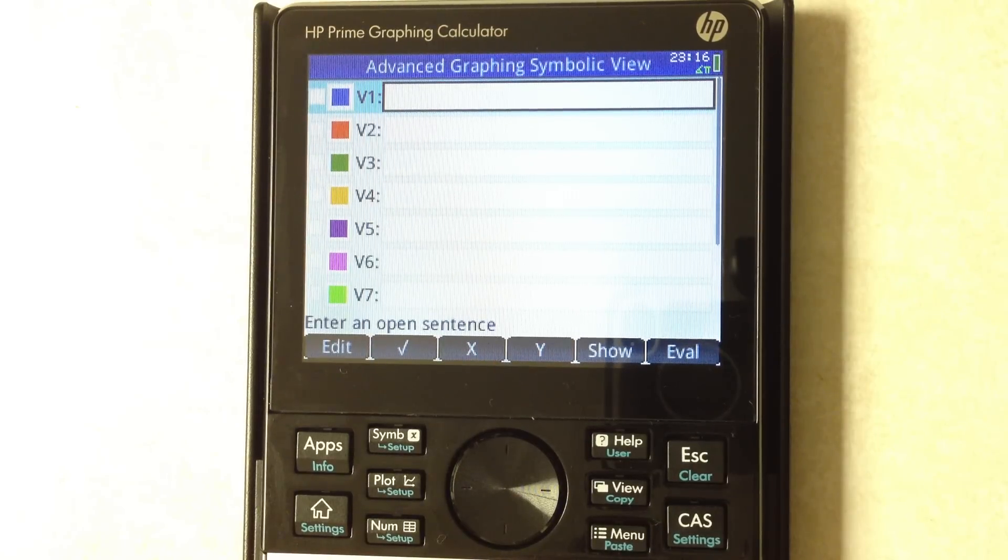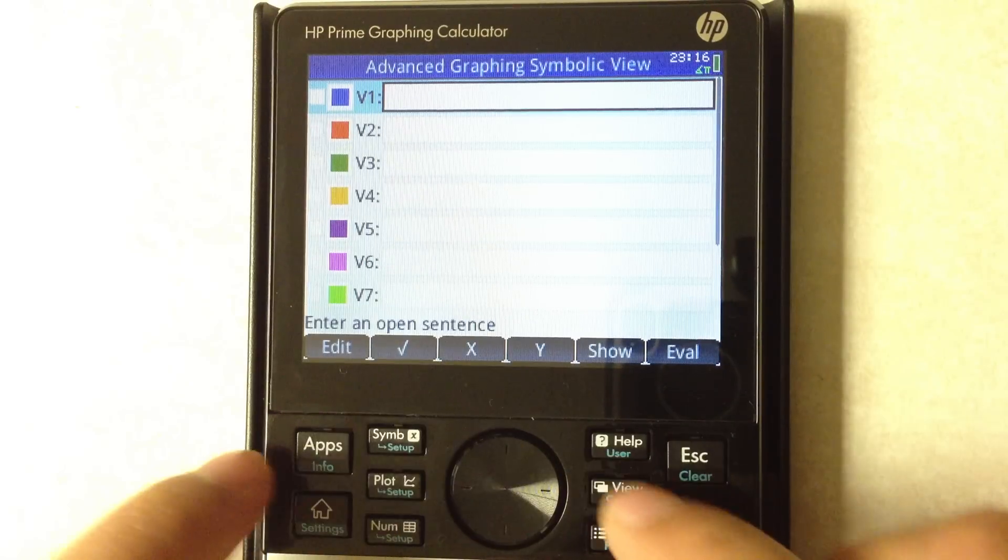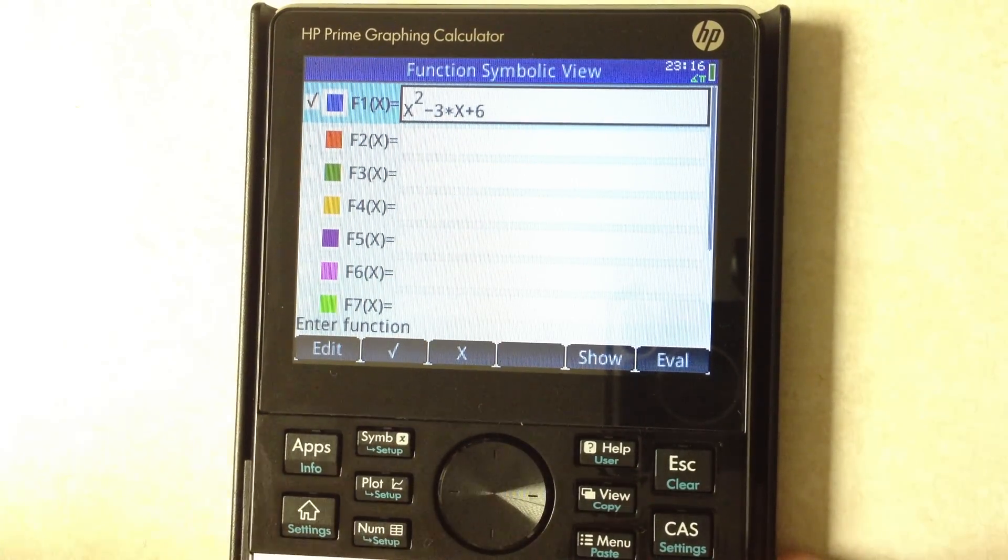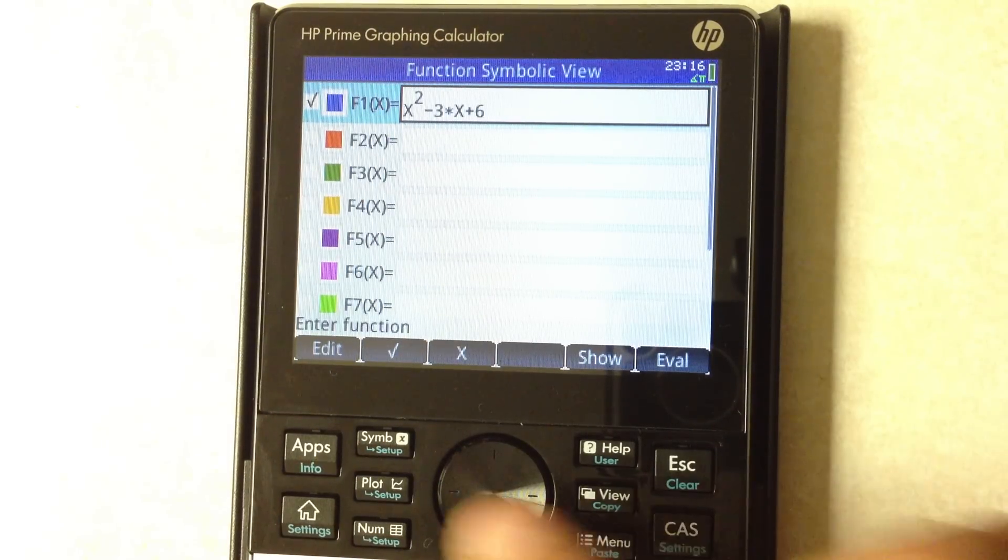Well let's show the simple graphing app first. So this is what you would use to graph simple functions like one variable functions, say a polynomial x squared minus 3x plus 6. You hit plot.